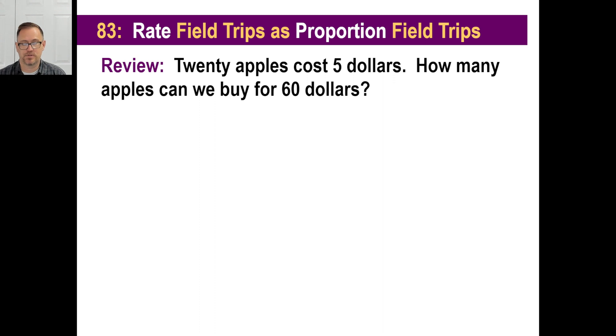So let's do an oldie first. In Saxon, you do something new, but what you do is you go, okay, let's make this new thing look old, and then, oh yeah, we can do that. So let's do an oldie. Twenty apples cost five dollars. How many apples can we buy for sixty dollars? Well, what we do is we go, twenty apples. You know what, forget that. I'm just going to reduce it. Twenty apples cost five dollars. That means four apples, if you reduce the fraction, cost one dollar, right?